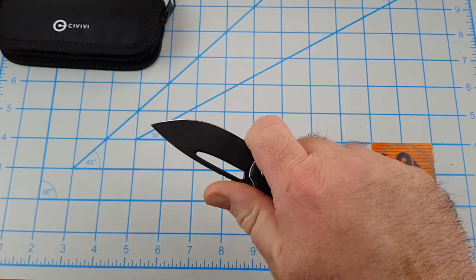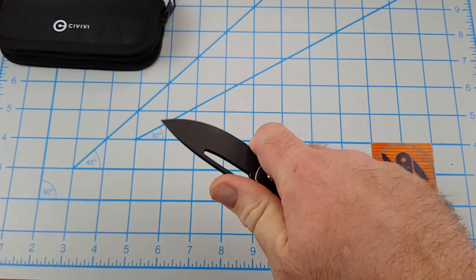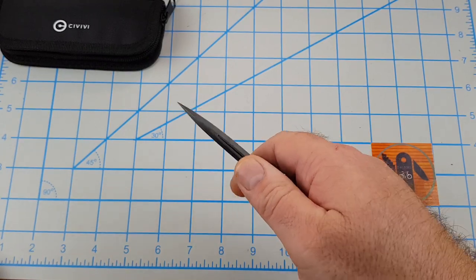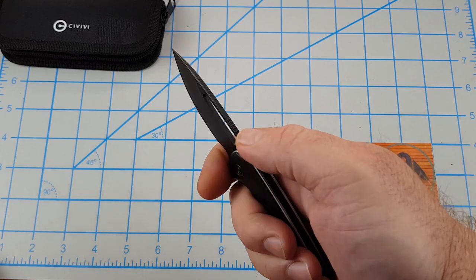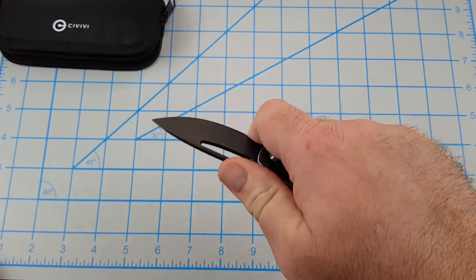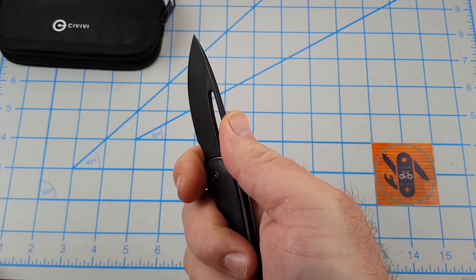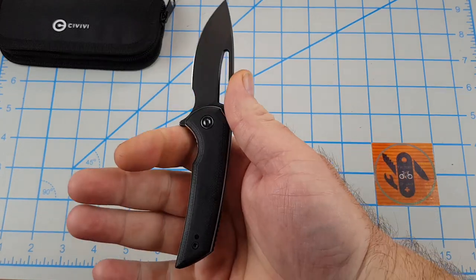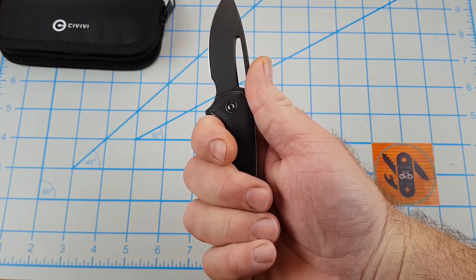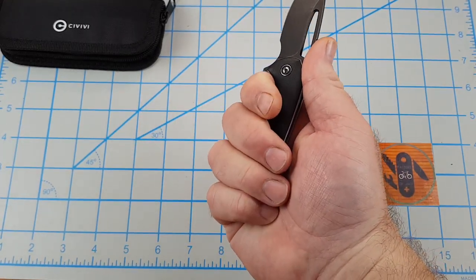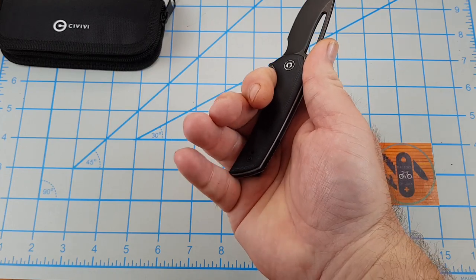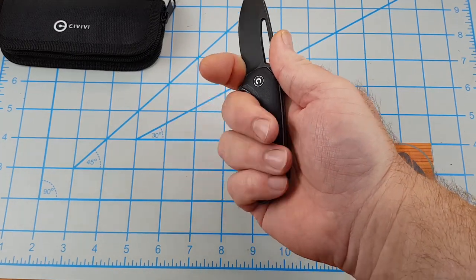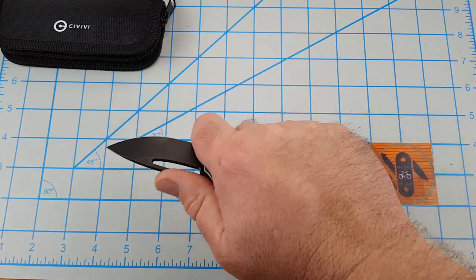It also has this awesome forward finger choil. I can get my fat sausage fingers in there no problem. Good jimping on top, not too sharp, not overly aggressive, but it works. Kind of locks your thumb in. This forward finger choil is excellent. You can choke back and I can get three fingers. I wear extra large size gloves. Easy three fingers, my pinky just misses.